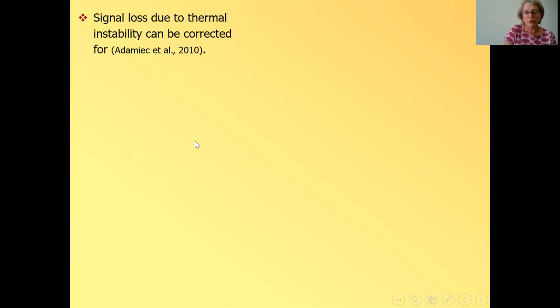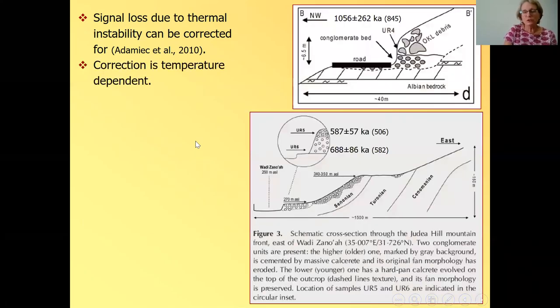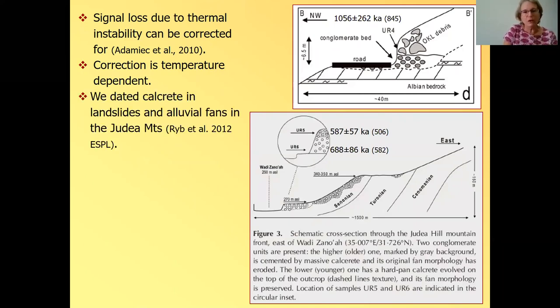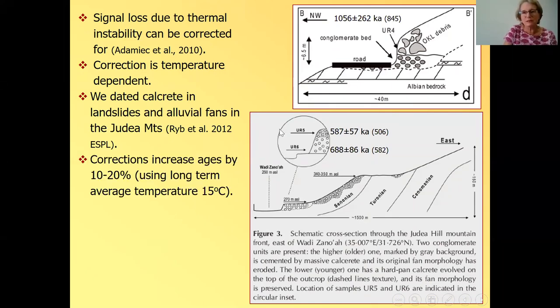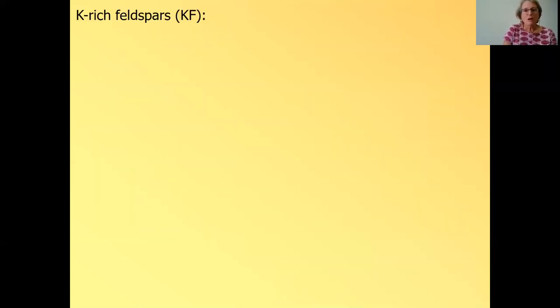Now it's been shown by Adamiec et al in 2010 that the signal loss due to thermal instability can be corrected for. If you know the temperature and you know the dose rate, it can be done. And I'll just show you an example. It's not an archaeological example. It's a geological study done by Uri Ryb and was published in 2012, where we dated carbonate rich alluvial fans and calcrete from landslides in the west of the Judea mountains. And here you see the corrected age, corrected for thermal instability. And this is the original age. So with the ages, the correction increases the age by 10 to 20%. So here we get an age of close to a million years. And here on these terraces, we get ages of 590 and 690,000 years. So pretty old. And the reason we can get such old ages is because these are very carbonate rich and the dose rate for these samples is very, very low 0.4 to 0.6 gray per thousand years.